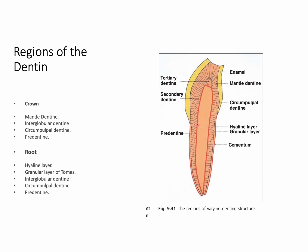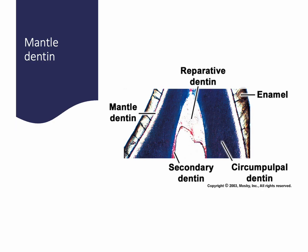Because the odontoblasts actually lie in the pulp, the mantle dentine we see in the crown is not replaced, but instead we see a layer called the hyaline layer in the root. Now we'll go into the details — so what is the mantle dentine?